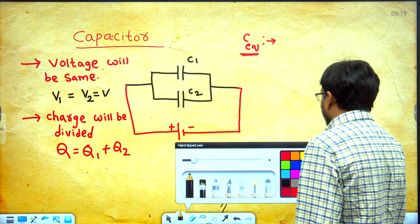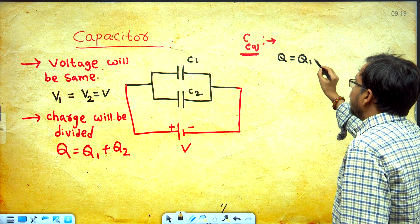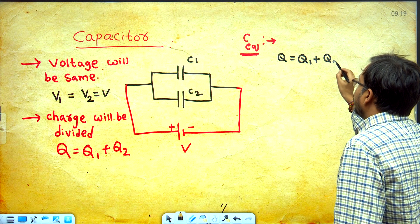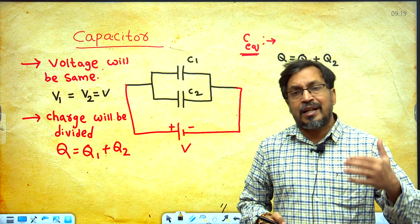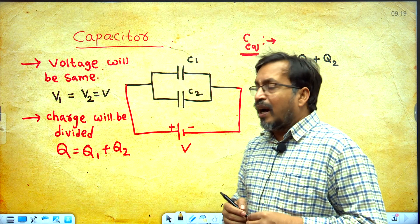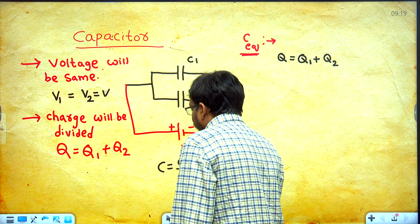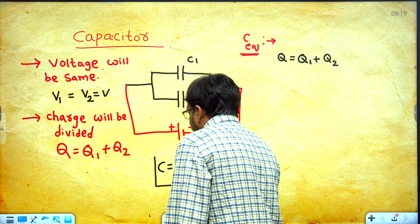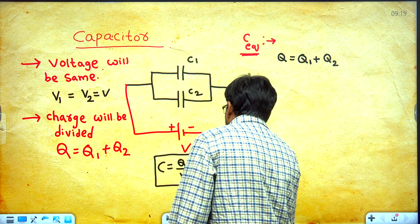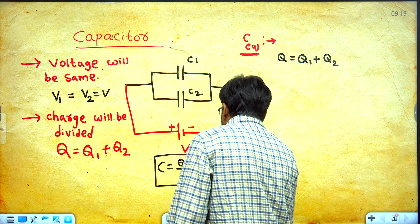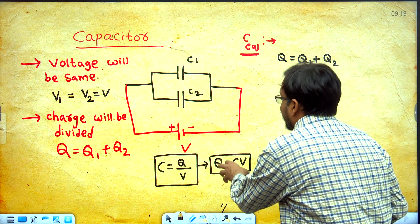I am considering the formula condition q equal to q1 plus q2. If three capacitors: q1 plus q2 plus q3. For N capacitors: q1 plus q2 plus q3 plus ... plus qn. We already discussed the relation C equal to q by V. From this formula, I am writing q equal to CV.